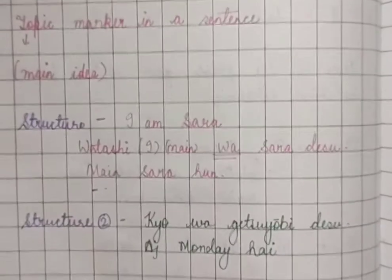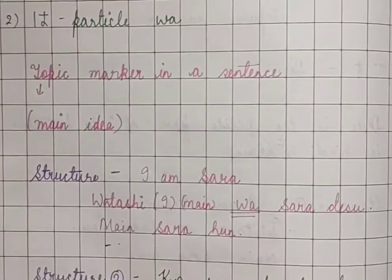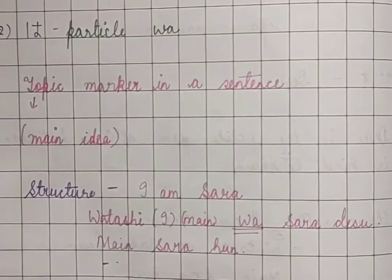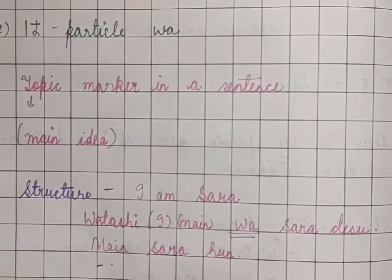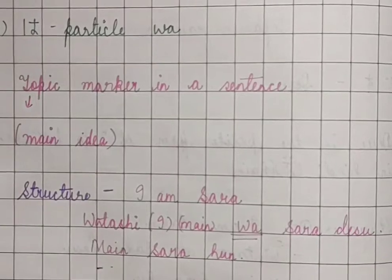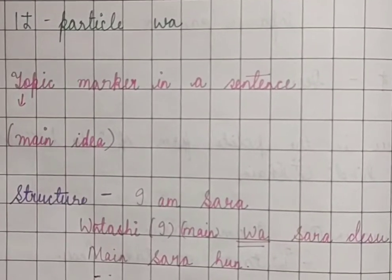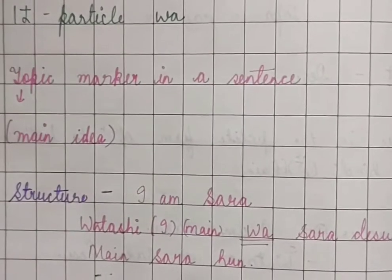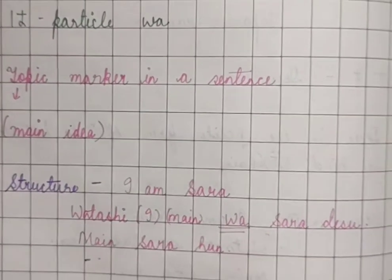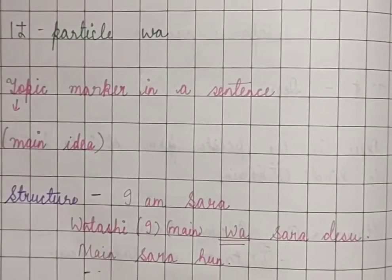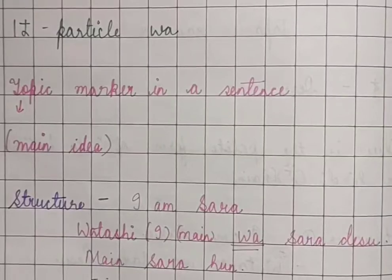So this is it, guys — these are your particles: desu and wa. They are easy and there is nothing more complex in the wa particle — it is just a topic marker. You can use it from the basics, and when you go to higher levels you will understand more. I hope this video was helpful. Please like, share, and subscribe. Thank you.